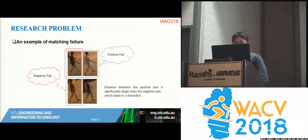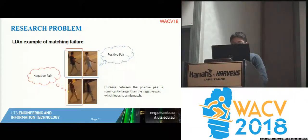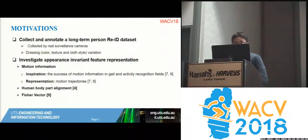Here is an example: in the first row the same person is shown under different clothes, and in the columns you can see two persons wearing similar clothes. If we use a normal similarity method like cosine similarity, the inter-class similarity — between different persons — is very high, meaning common short-term methods cannot work here. Our motivation is that we have to collect data of the same person under different clothes and investigate motion-based features rather than appearance.